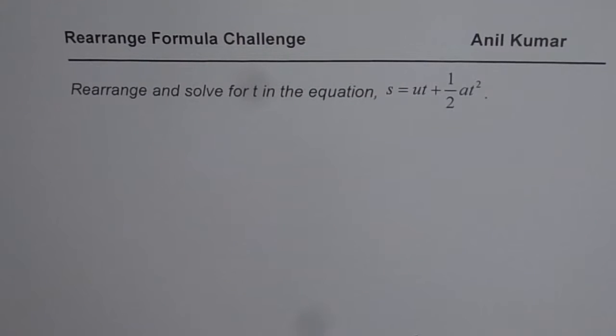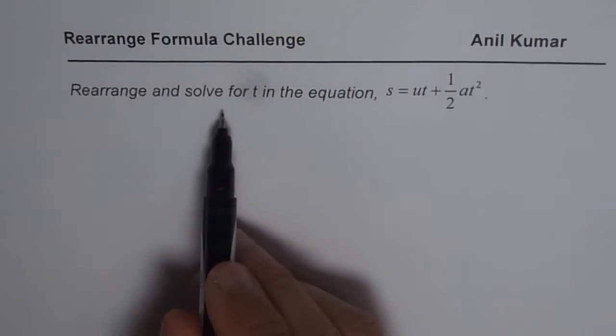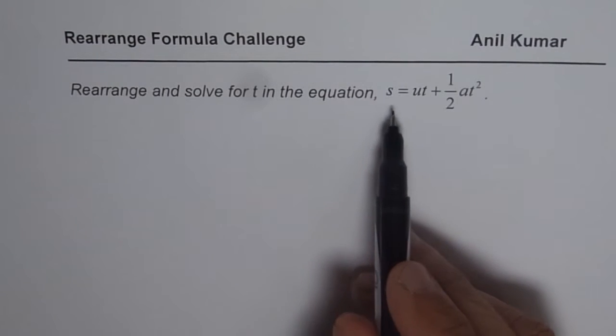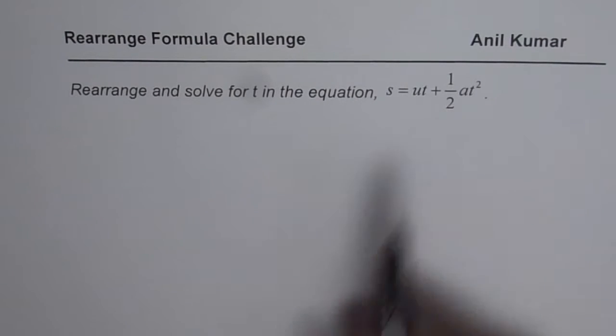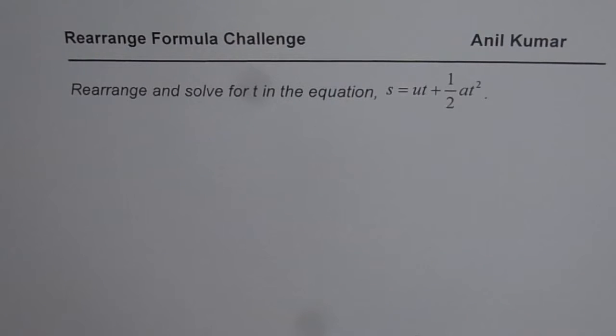I'm Anil Kumar sharing with you one of the toughest questions on rearranging variables. The question here is, rearrange and solve for t in the equation s equals ut plus half a t square. Thanks to my subscribers to remind me to upload this video. Actually I forgot to upload it earlier.